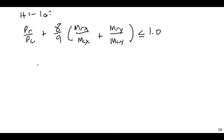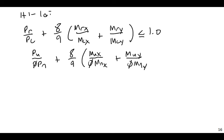Or you could also think of this as P ultimate divided by phi PN plus 8 ninths times M ultimate in the X direction, the strong axis direction, divided by phi M nominal in the X direction, plus M ultimate in the Y direction, the weak axis bending, divided by phi MN in the Y direction, and all of this must be less than or equal to 1.0.